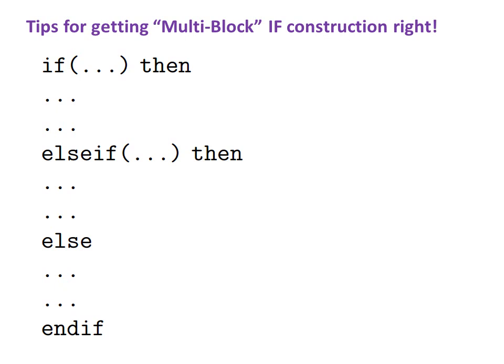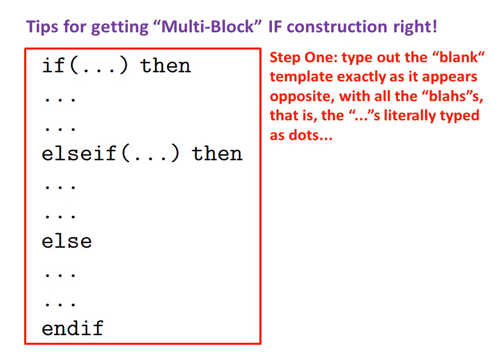Tips for getting multi-block IF construction right. Step 1: Type out the blank template exactly as it appears opposite, with all the blahs. That is the dot dot dots, literally typed as dots. Absolutely no details, just the bare template itself.